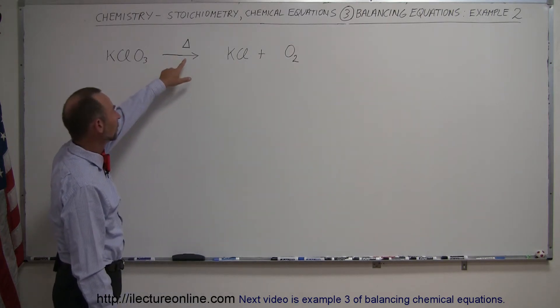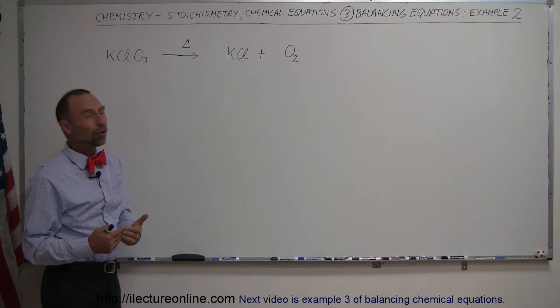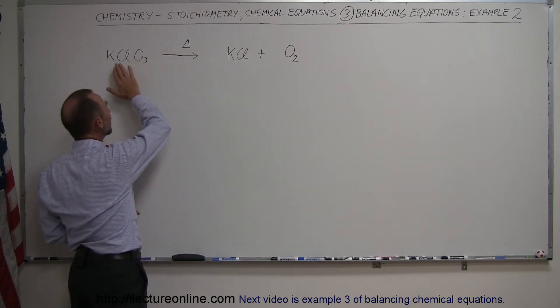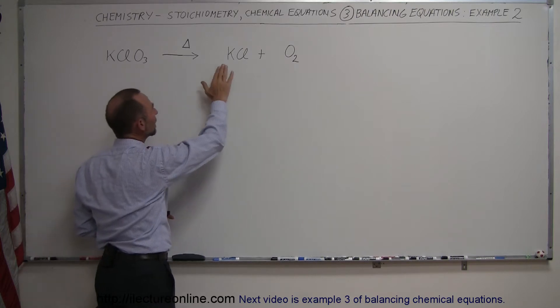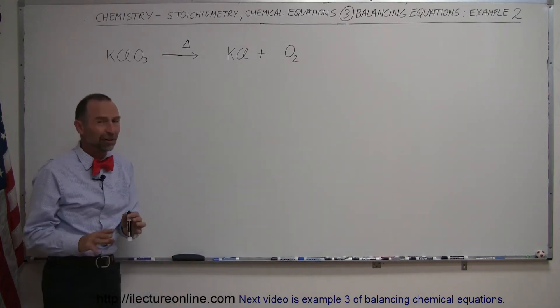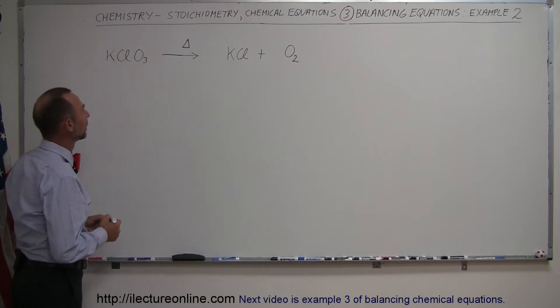Now that little triangle over here means that it will not happen on its own, you will have to add heat. So if we add heat, if we heat this up, it will dissociate into potassium chloride and oxygen gas. By itself, probably nothing will happen.